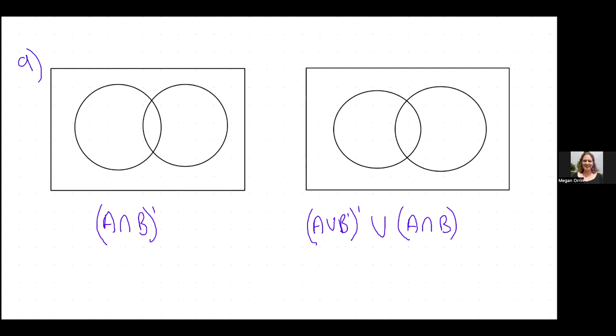This tells us that we want the intersection of A and B, so the bit that they share in common, but the complement of that or not that. So not the intersection of A and B. So that just means I get to color in everything except that. Nice and easy.